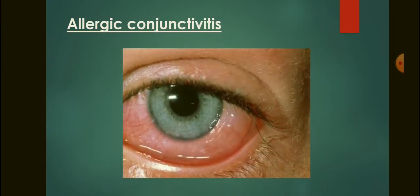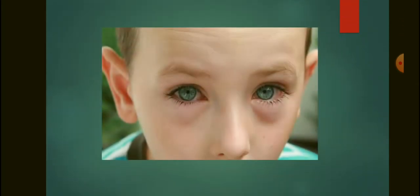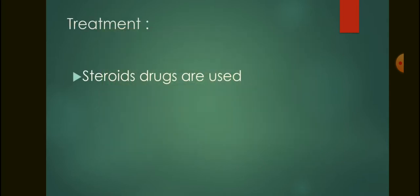Allergic conjunctivitis means the inflammation of the conjunctiva is due to an allergic reaction in the body. The conjunctiva will appear inflamed, as you can see. Treatment involves steroid drugs, and you should avoid places where you have a tendency to develop allergies. Always consult an ophthalmologist or optometrist before taking any drugs.